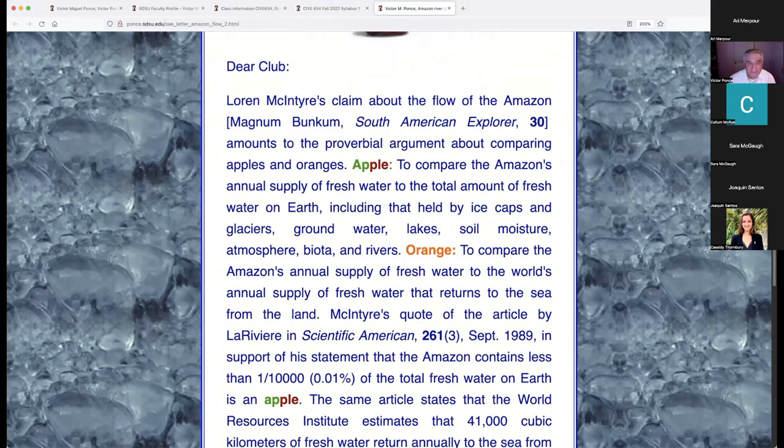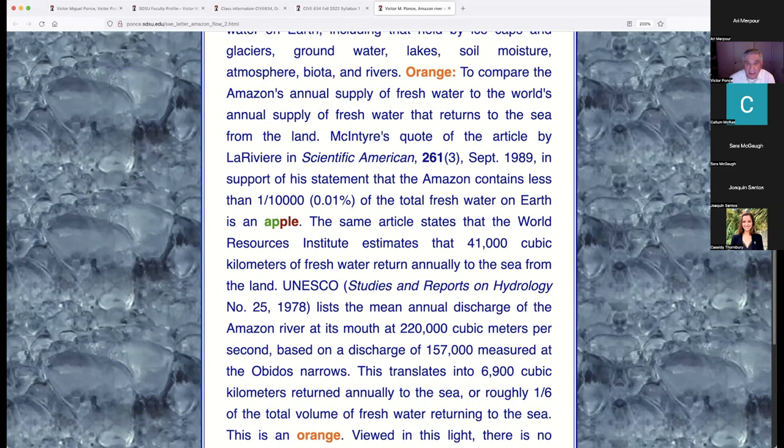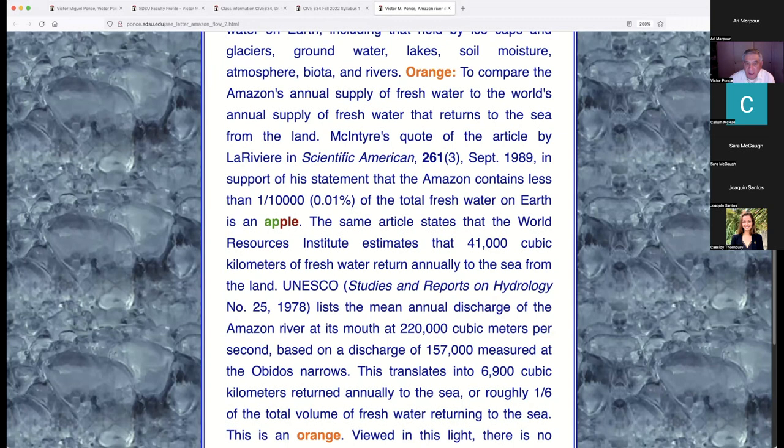To compare the Amazon's annual supply of fresh water to the total amount of fresh water on earth is one thing. I call this an apple. On the other hand, to compare the Amazon's annual supply of fresh water to the annual supply of fresh water that returns to the sea from the land, that is, the river runoff, is another thing. This I called an orange. McIntyre was referring to the apple, but when people talk about the Amazon's water, they are usually referring to the orange. McIntyre's claim amounts to the proverbial argument about comparing apples and oranges.